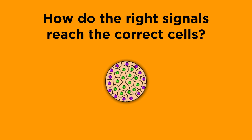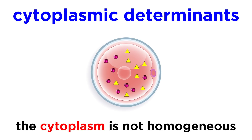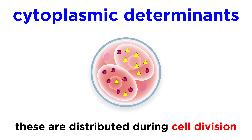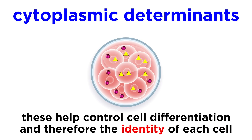So one might ask, how is it that the different chemical signals reach the correct cells for all of this to work out just right? Much of this comes from cytoplasmic determinants that are already present in the cytoplasm of the mother's egg cell. This cytoplasm is not homogeneous, and there are various RNA molecules, organelles, and proteins distributed unevenly. This means that after a couple rounds of cell division, each resulting cell will have a different quantity of these determinants, and this plays a large part in determining the fate of each cell, as these play a part in cell differentiation.